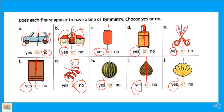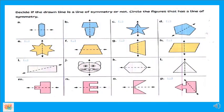يبه الغدو تعلمنا يعني ايه symmetry، ويعني ايه line of symmetry. طيب، كوشتشن اللي بعده بيقول لي: decide if the drawn line is a line of symmetry or not — هو مش عاوزك أنت ترسم lines، بيسألك يا ترى الـ lines اللي رسمها هي فعلاً line of symmetry ولا لأ؟ فبيقولي: circle the figure that has a line of symmetry — الفجر اللي تلاقيه عنده line of symmetry اعمل عليه circle.